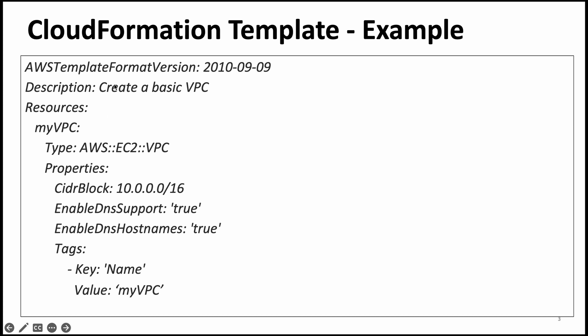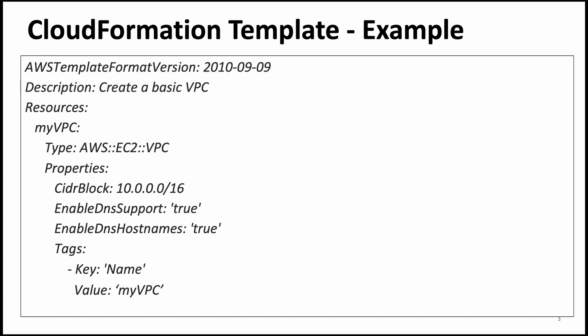Let us see a sample CloudFormation template. This one is for creating a VPC. The first line talks about the template format version — there were multiple versions but this is the latest one. Then you have the description, which is like metadata where you describe what the template is doing. Then you have the resources section, which is the only mandatory part of the CloudFormation template, because you need to describe the resources you are going to create.